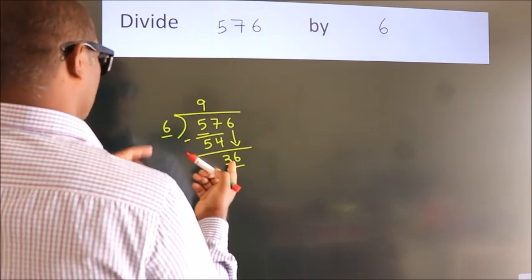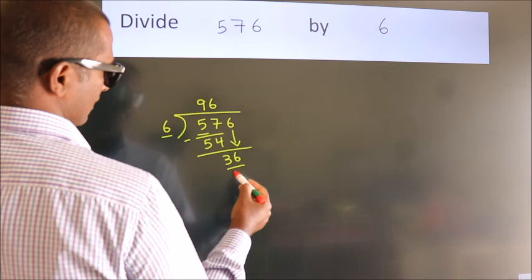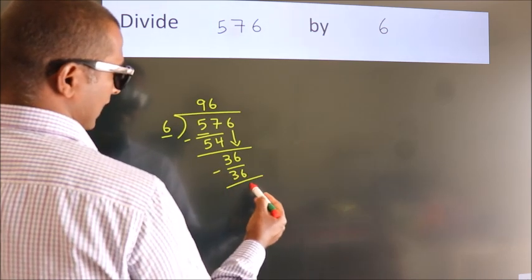When do we get 36? In the sixth table, 6 times 6 is 36. Now we subtract. We get 0.